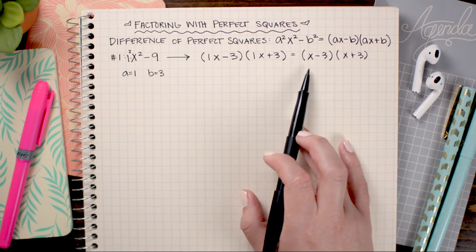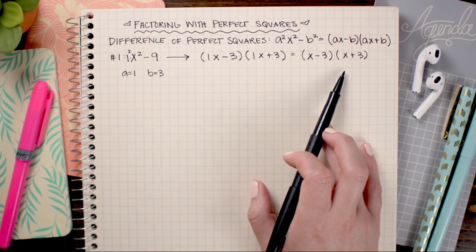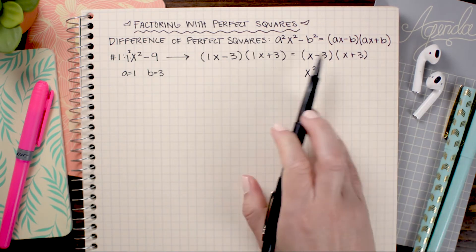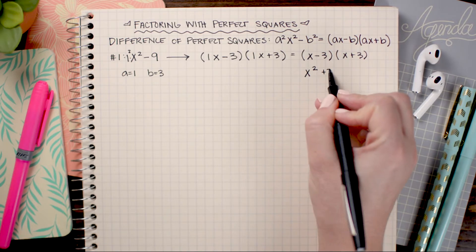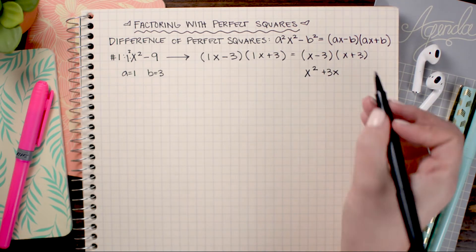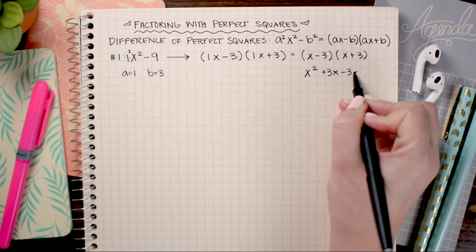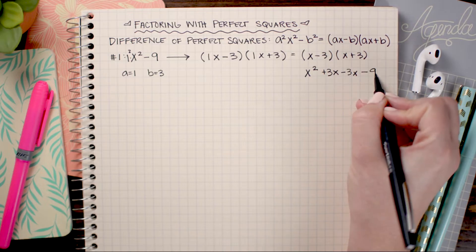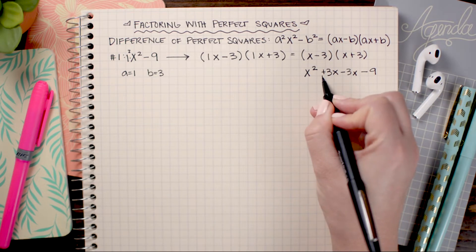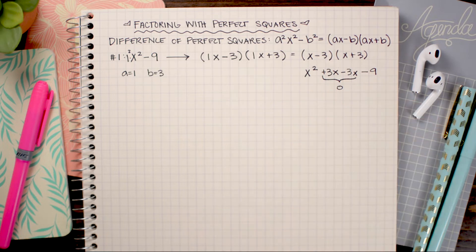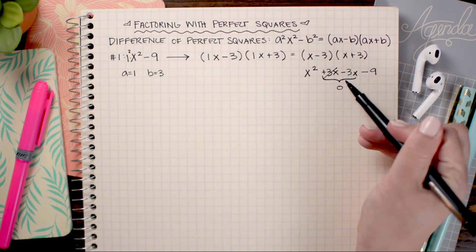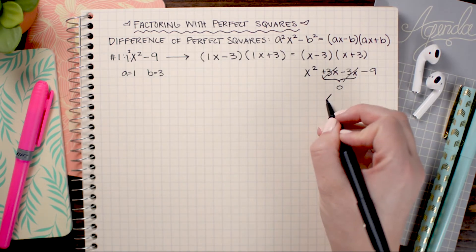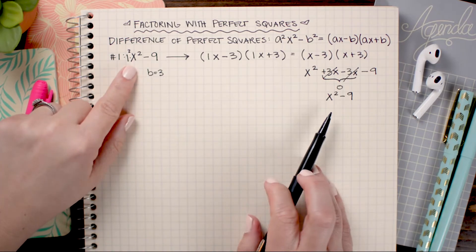Let's go ahead and FOIL this out to see how that works. x times x is x². x times positive 3 is positive 3x. Minus 3 times x is minus 3x. And minus 3 times positive 3 is minus 9. You can see that plus 3x minus 3x equals zero, so those cancel out, and we're left with x² minus 9 — which is where we began.